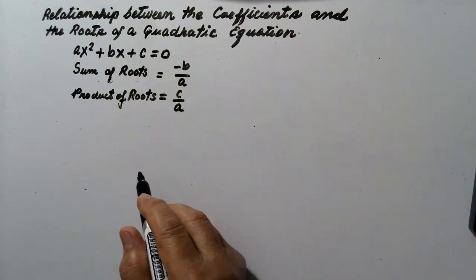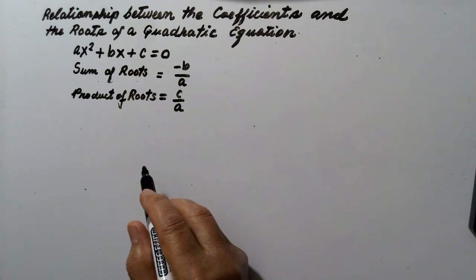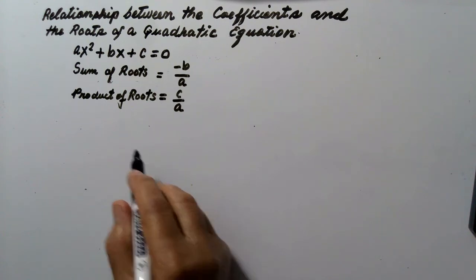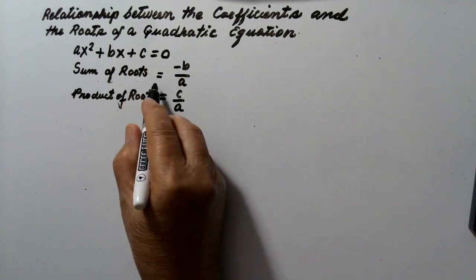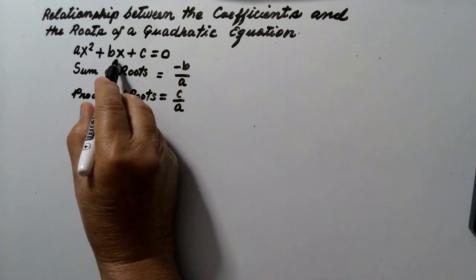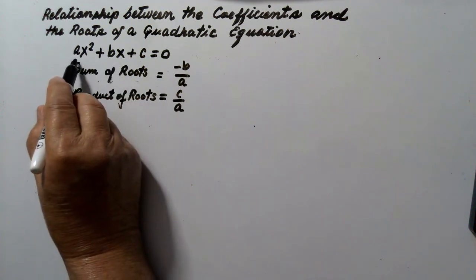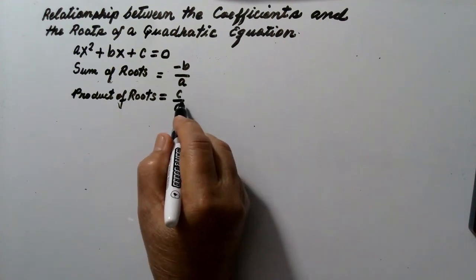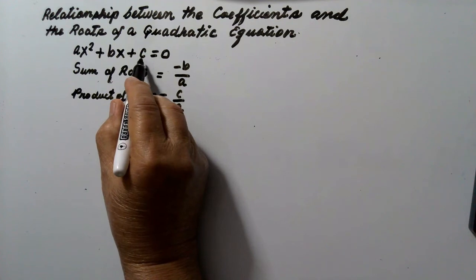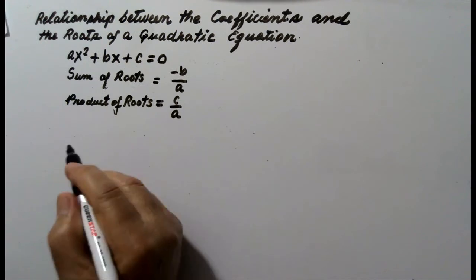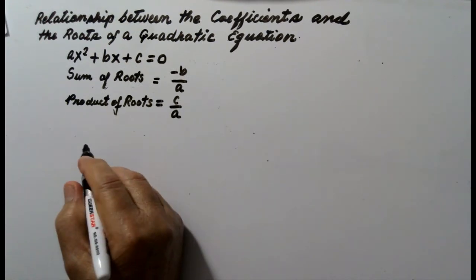Our topic for today is about the relationship between the coefficients and the roots of a quadratic equation. The sum of the roots of a quadratic equation is equal to the negative of the coefficient of x divided by the coefficient of x squared, and the product of the roots is equal to the constant term divided by the coefficient of x squared. Let us say our quadratic equation is...